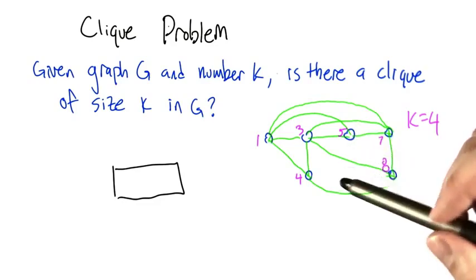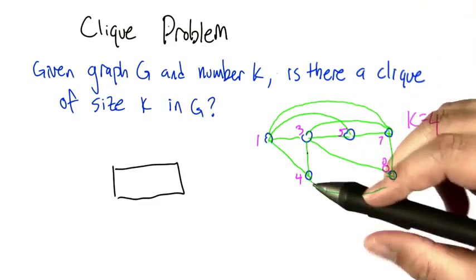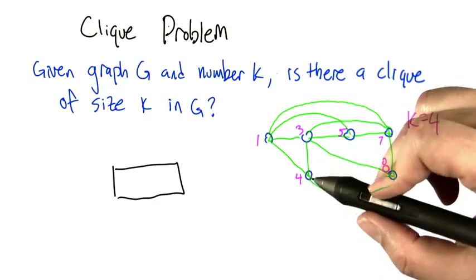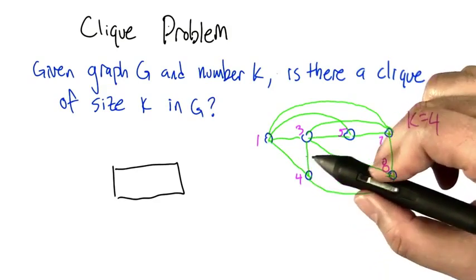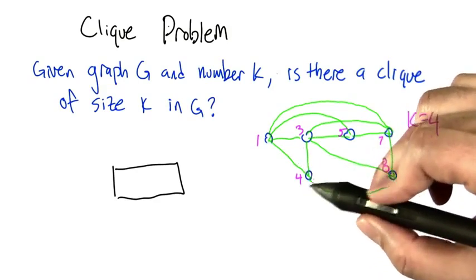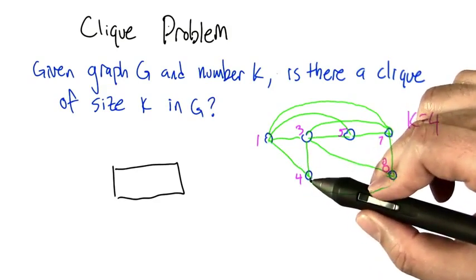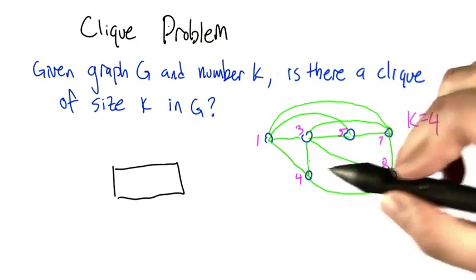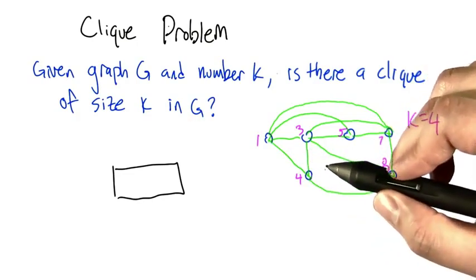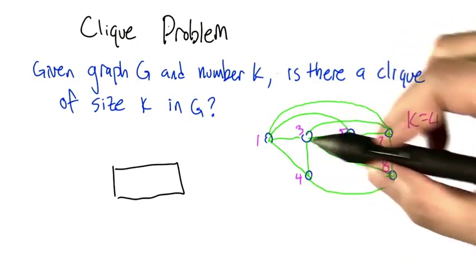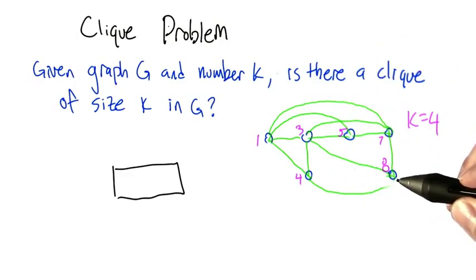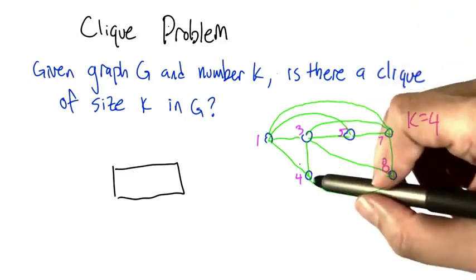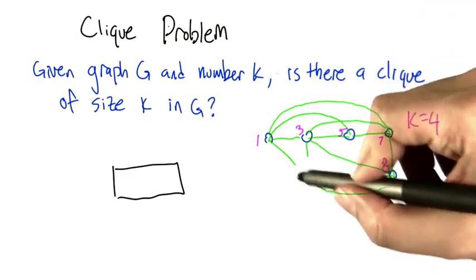Let's take a look at node 4. Node 4 has exactly an out degree of 3. So if 4 is part of the clique, then its neighbors have to be the rest of the clique: 1, 3, and 8. But notice that 1 and 8 are not connected to each other, so 4 can't be part of a 4-clique.